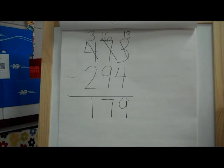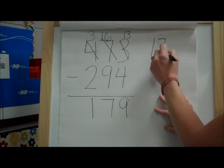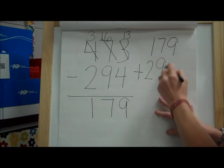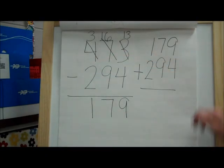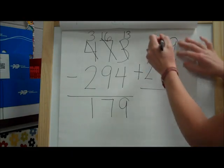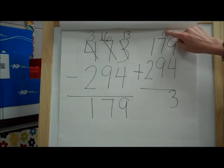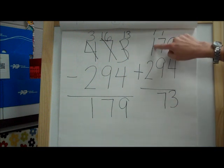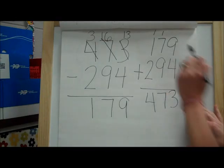Now, we are not through with this problem yet. We are going to use addition to check it. So when we use addition to check it, we're going to start with this number. We're going to put it on top, 179, and we're going to add it to 294. And if we did it correctly, we should wind up with 473. All right, here we go. 9 plus 4 is 13. 9 plus 1 is 10. 10 plus 7 is 17. And 2 plus 1 plus 1 is 4. So we ended up with the same number. So that means we got it correct.